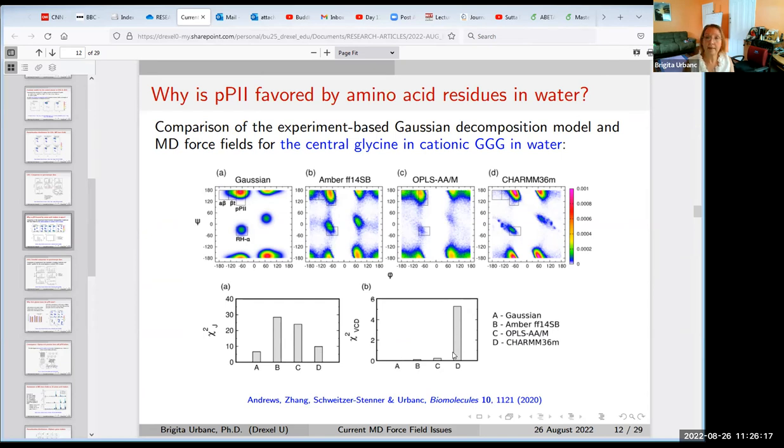It turns out that this level of chi-square VCD that we found even in CHARM, that looks menacing, is really not a problem because it's still below the experimental error bar. So in the case of glycine, we can simply forget about this chi-square VCD. CHARM36M does work quite well.